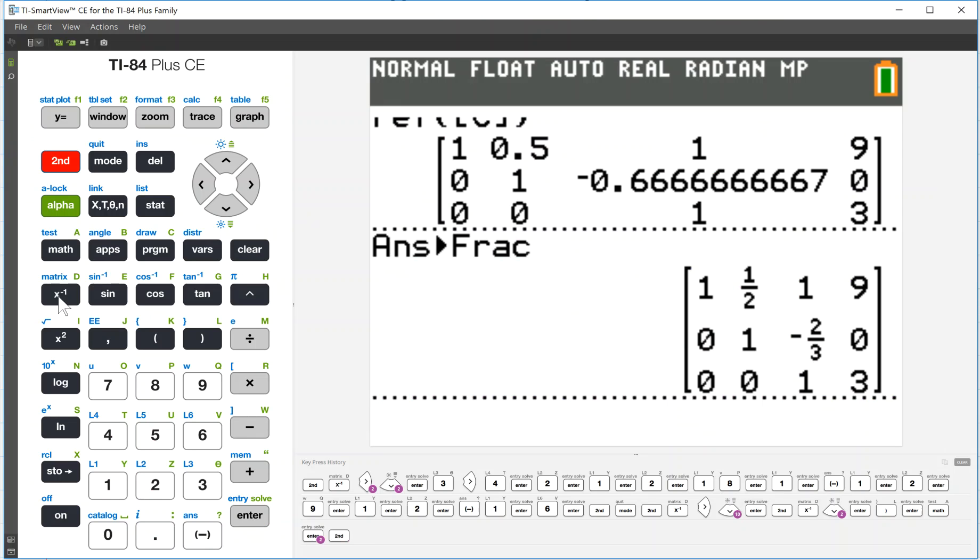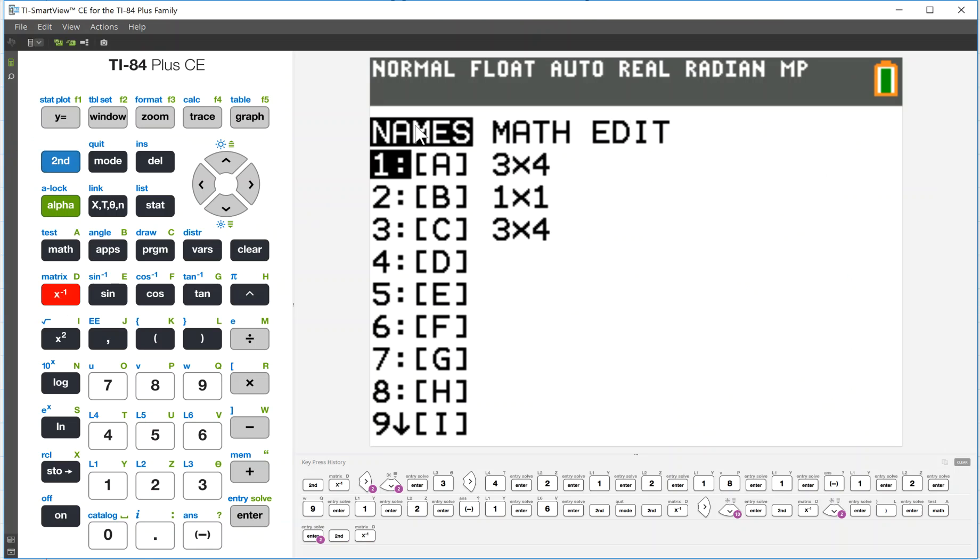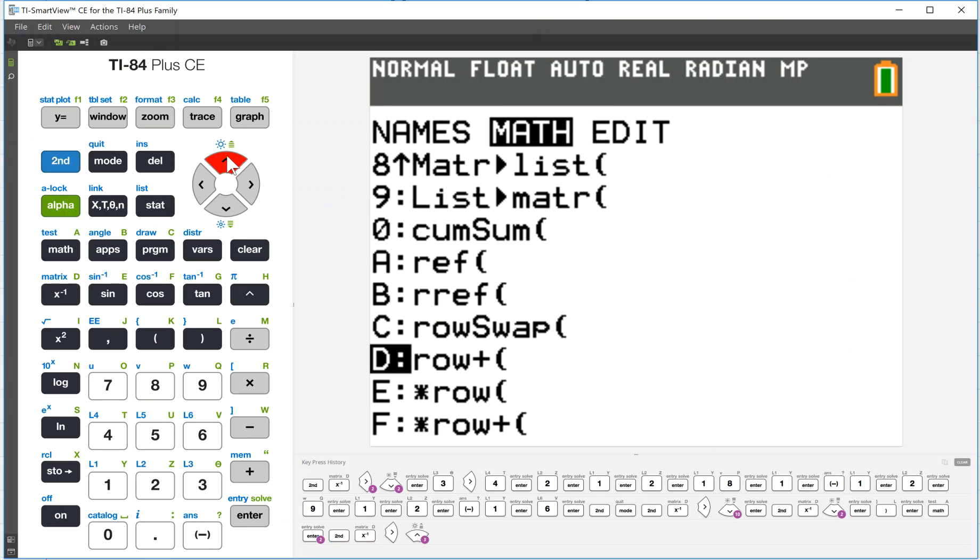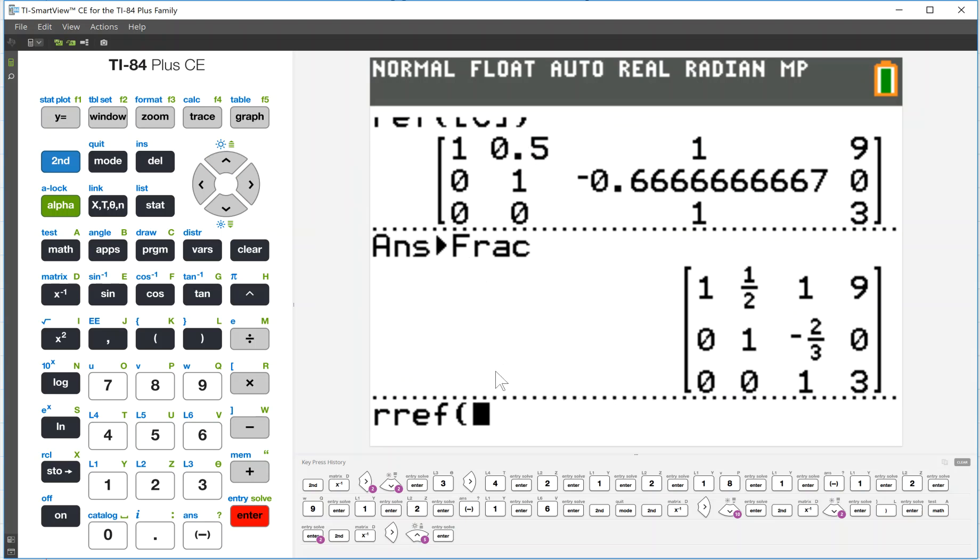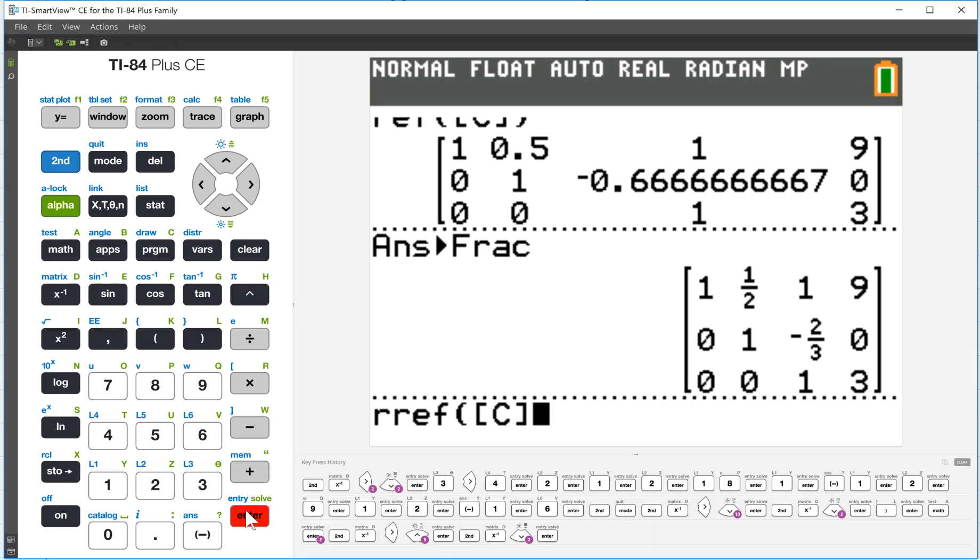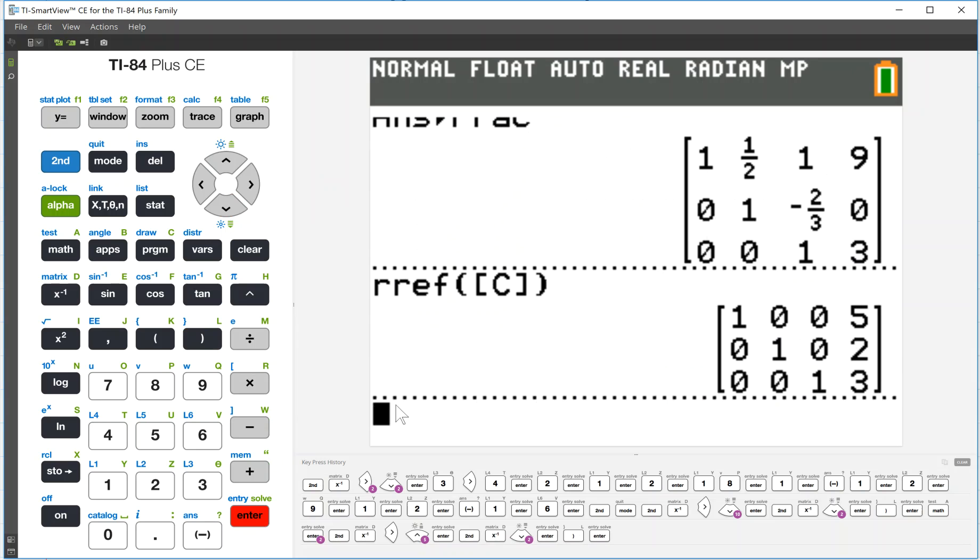You can go down, it just is, you have to click more. RREF, that's what we're going to use. Our matrix, we need to put in our matrix name again, our matrix is the matrix C, and then close parenthesis. And voila, there we go, we have the solution: five, two, and three.